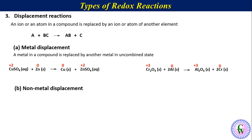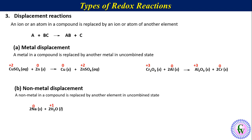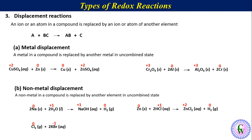Non-metal displacement reactions: a non-metal in a compound is replaced by another element in uncombined state. For example, reaction of sodium metal with water to produce sodium hydroxide and hydrogen gas — hydrogen, a non-metal in water, is displaced by sodium. Reaction of zinc metal with HCl to produce zinc chloride and hydrogen gas. Reaction of chlorine with KBr produces KCl and bromine — here the non-metal bromine in KBr is displaced by chlorine.